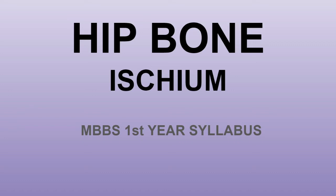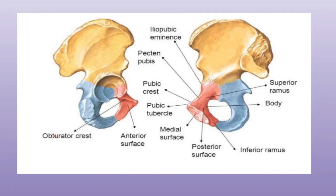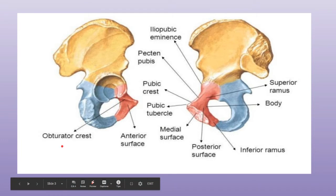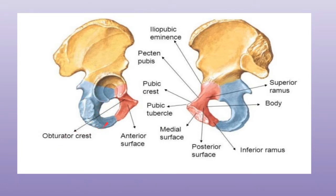Hello everyone, today we will discuss the ischium part of the hip bone. As you can see, this blue area is the ischium part of the hip bone. This ischium part actually forms the posteroinferior part of the hip bone.